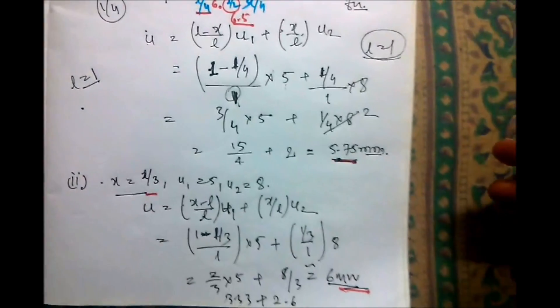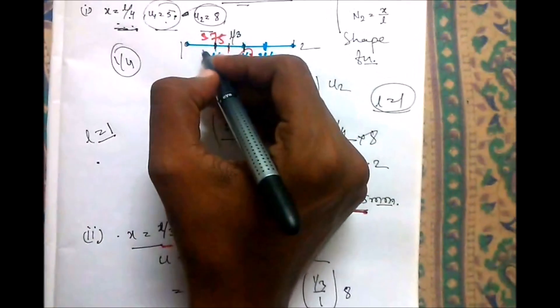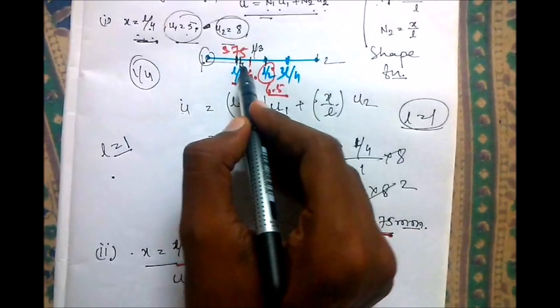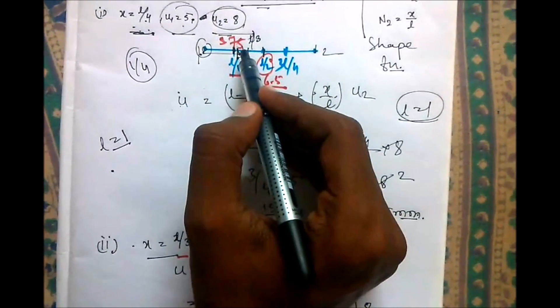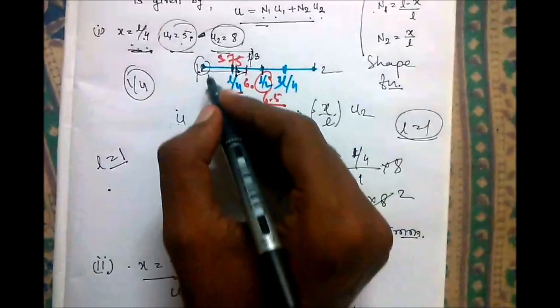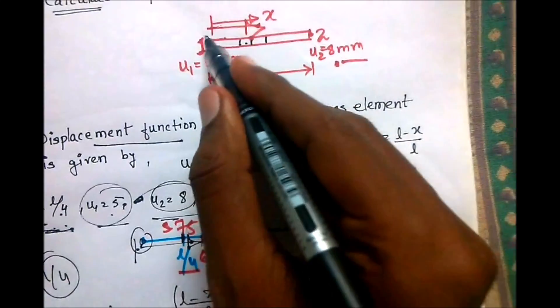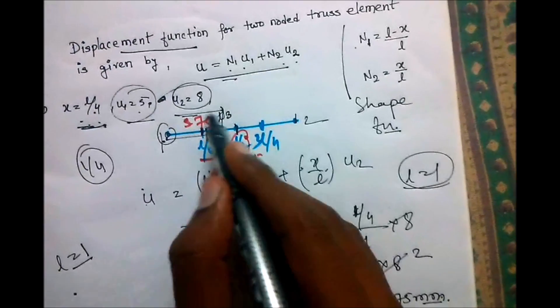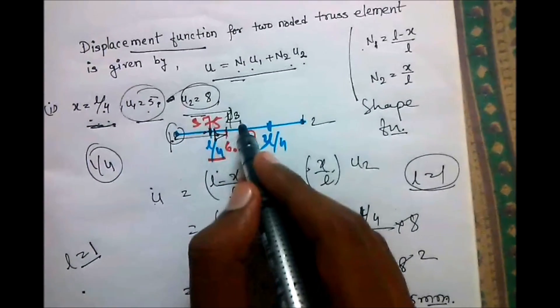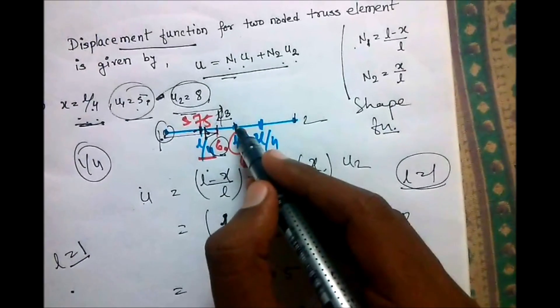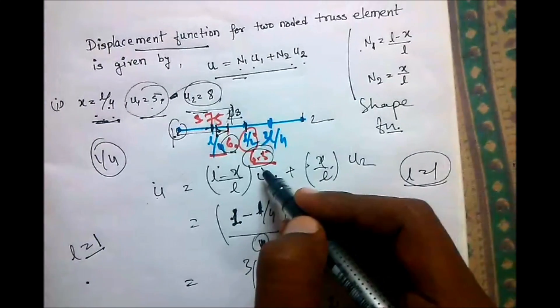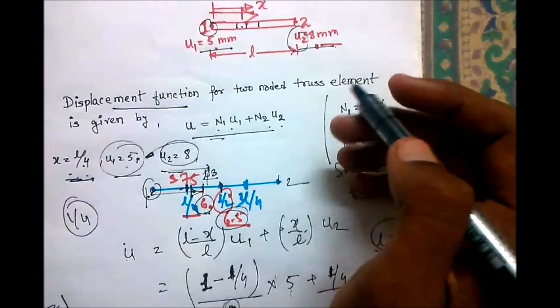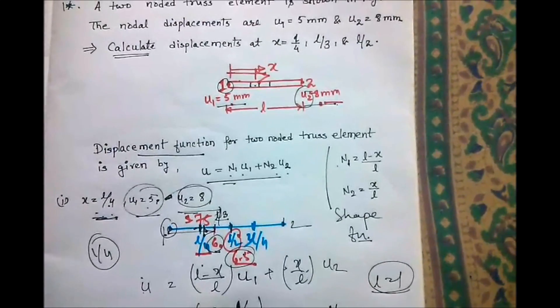What you can see here is at x = l/4 from the first end going across the x-axis linearly, the displacement is varying linearly. At node 1 it is 5mm, at l/4 it is 5.75mm, at l/3 it is 6mm, at l/2 it is 6.5mm, and at node 2 it is 8mm. The nodal displacements are varying linearly.